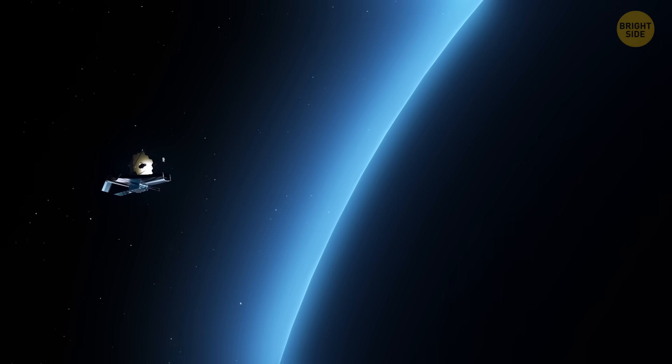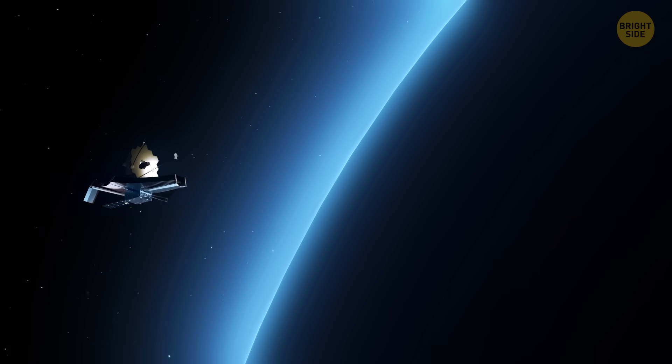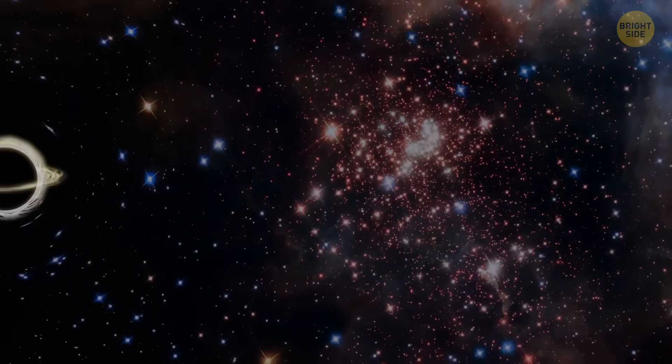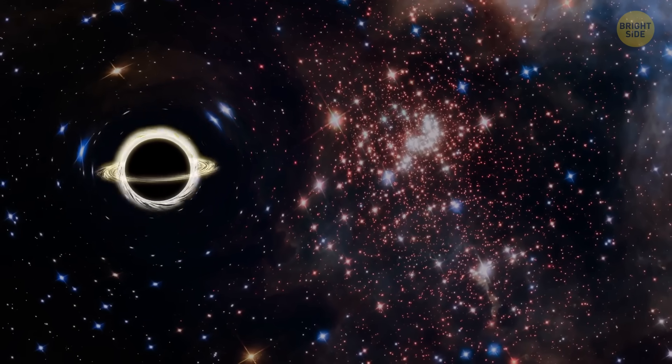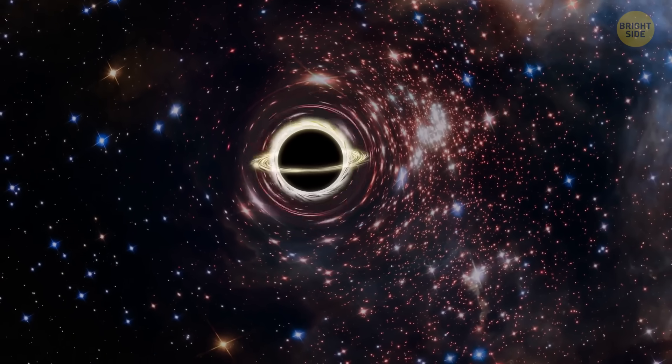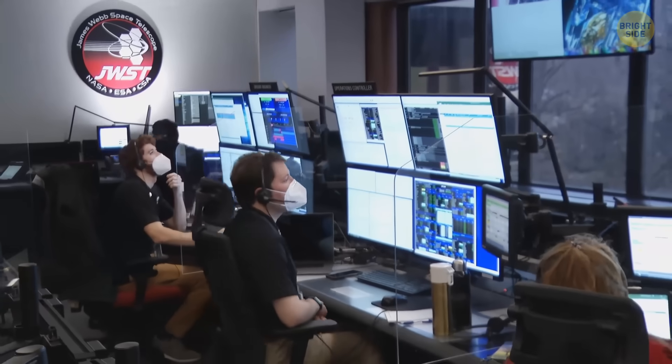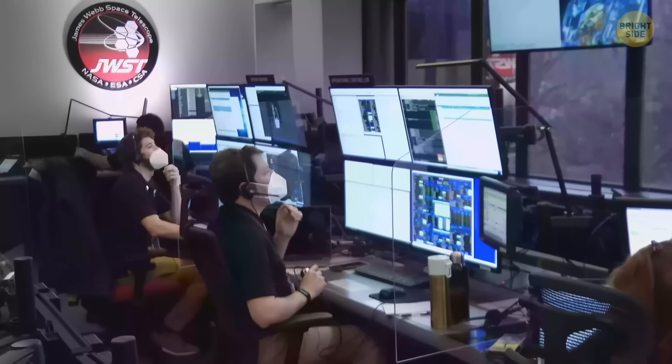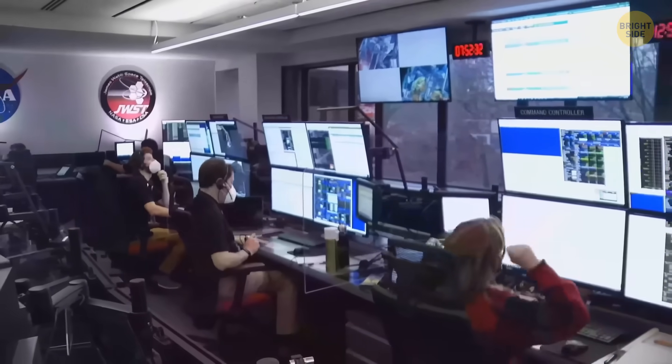At the same time, this discovery shows how amazing the James Webb Space Telescope is. Apparently, it can find things in space that were safely hidden from our eyes before. Another example is an impossible black hole it helped to detect. On second thought, this discovery might not be as astonishing as it seemed at first. Let's figure out this mystery together.